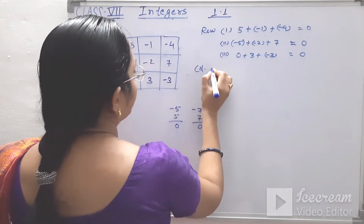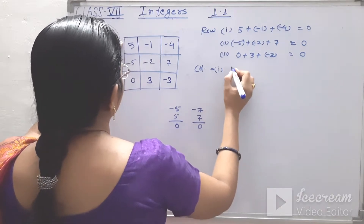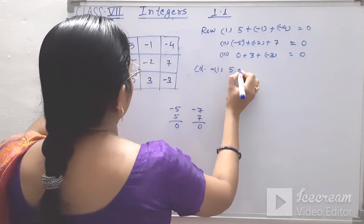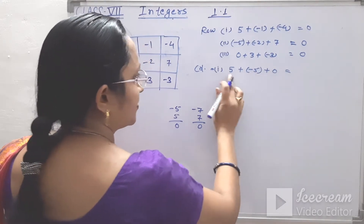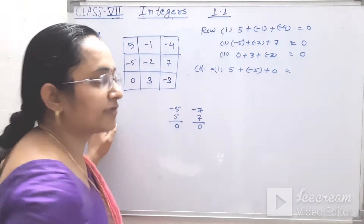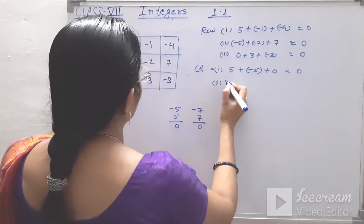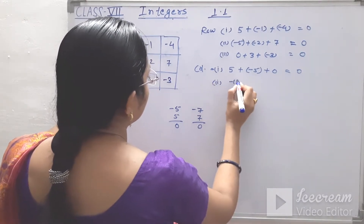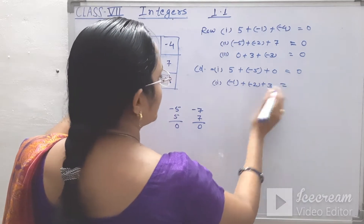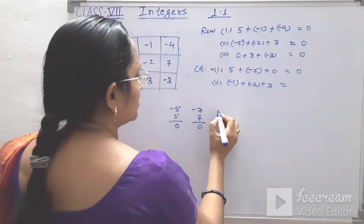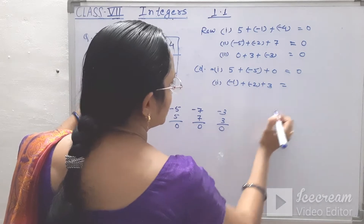In the first column, we see 5 plus minus 5 plus 0. Plus 5 and minus 5, the answer is 0. Second column: minus 1 plus minus 2 plus 3. Minus 1 and minus 2 gives minus 3, and plus 3 — answer is 0.